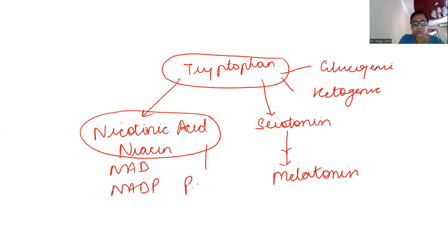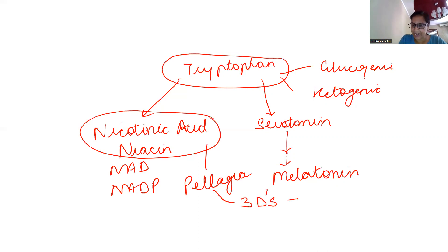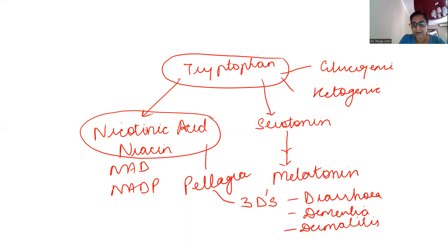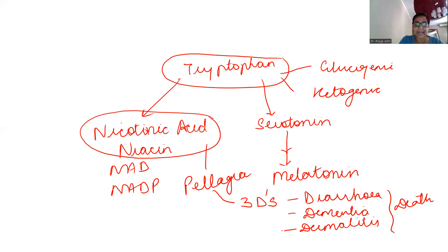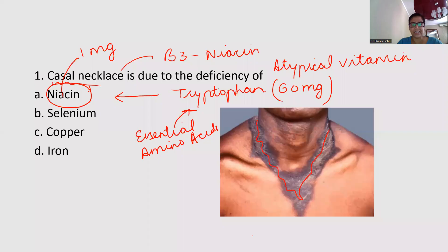If you look at the fate of tryptophan, it is both glucogenic and ketogenic. Glucogenic means it gives rise to precursors of glucose; ketogenic means it is converted into acetyl coenzyme A, which is related to fats. Niacin deficiency leads to pellagra, characterized by the four D's: diarrhea, dementia, dermatitis, leading to the fourth D — death. The characteristic skin manifestation is Casal's necklace.